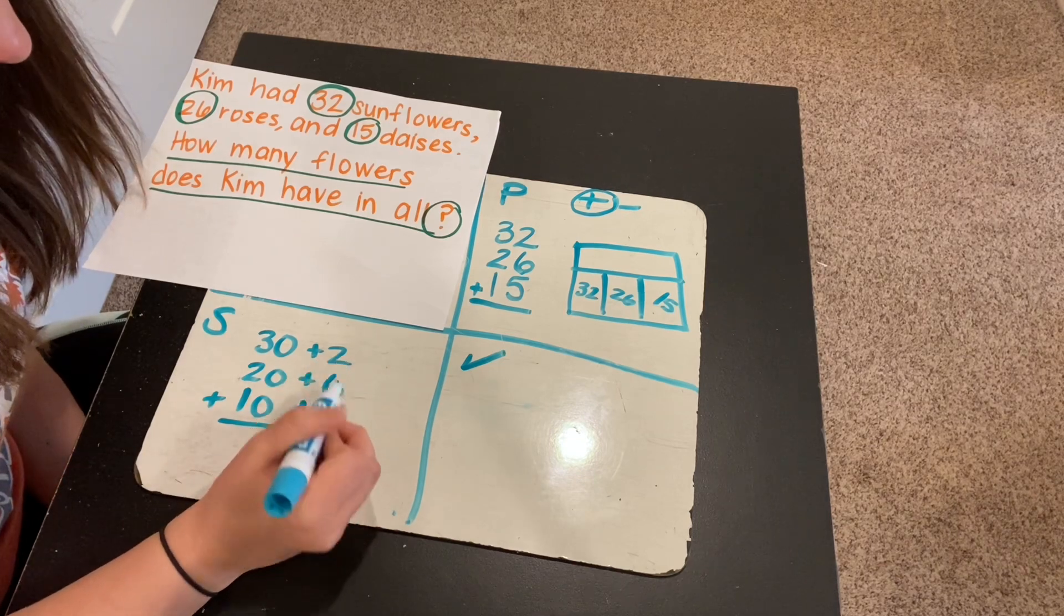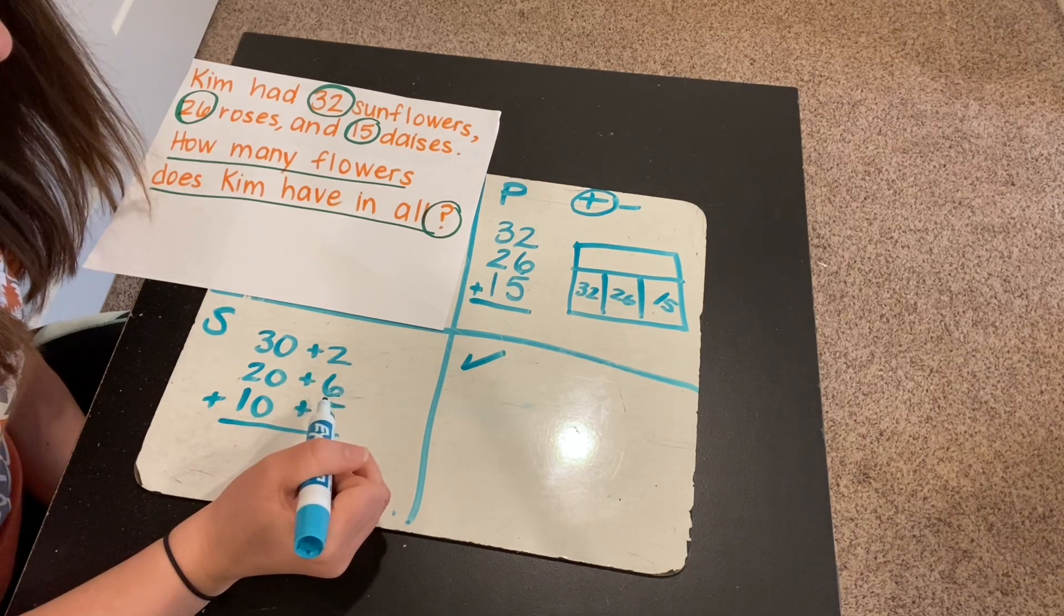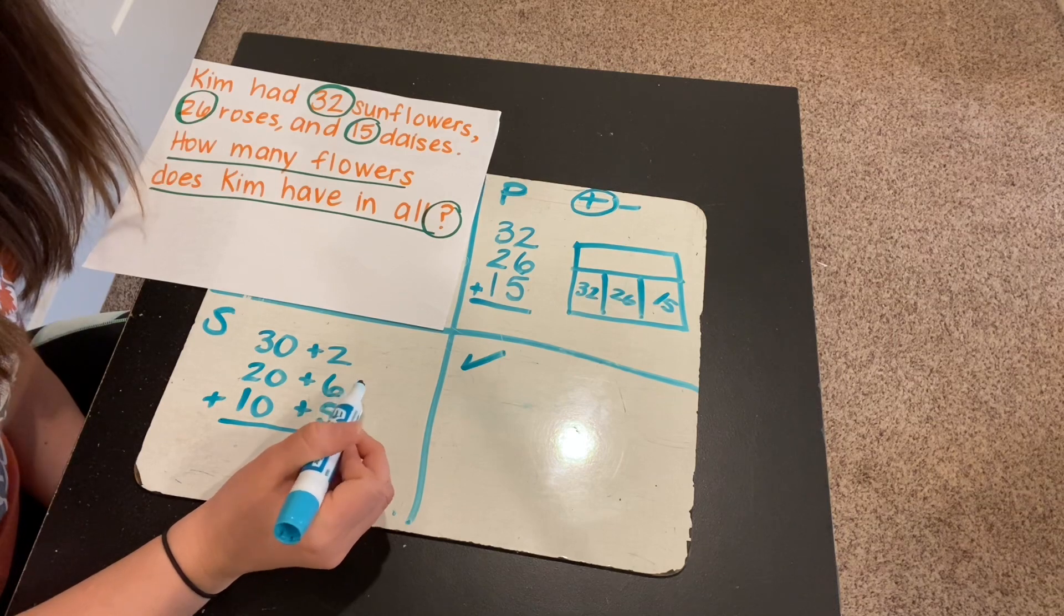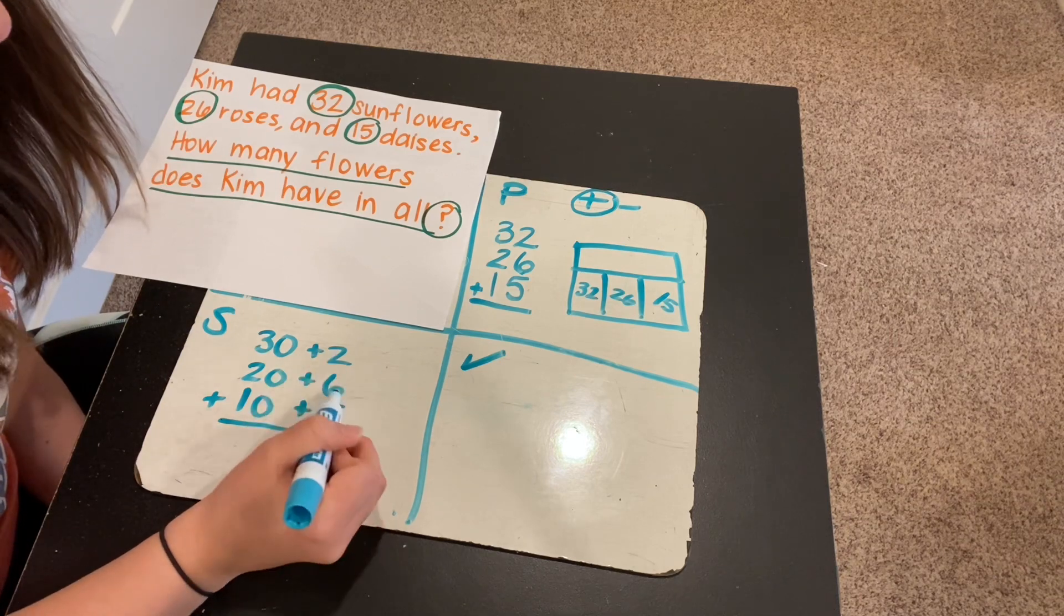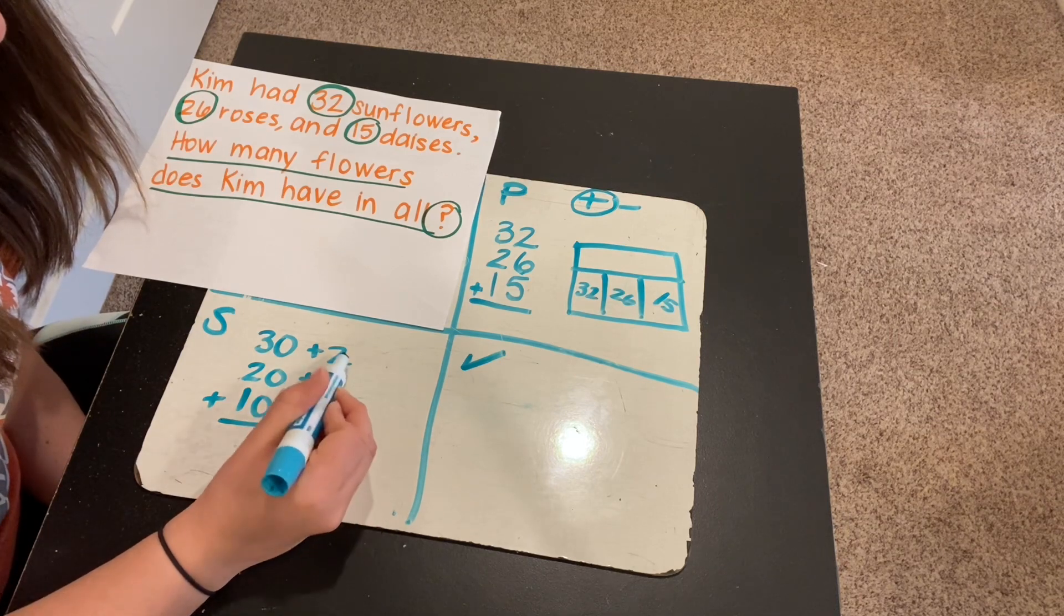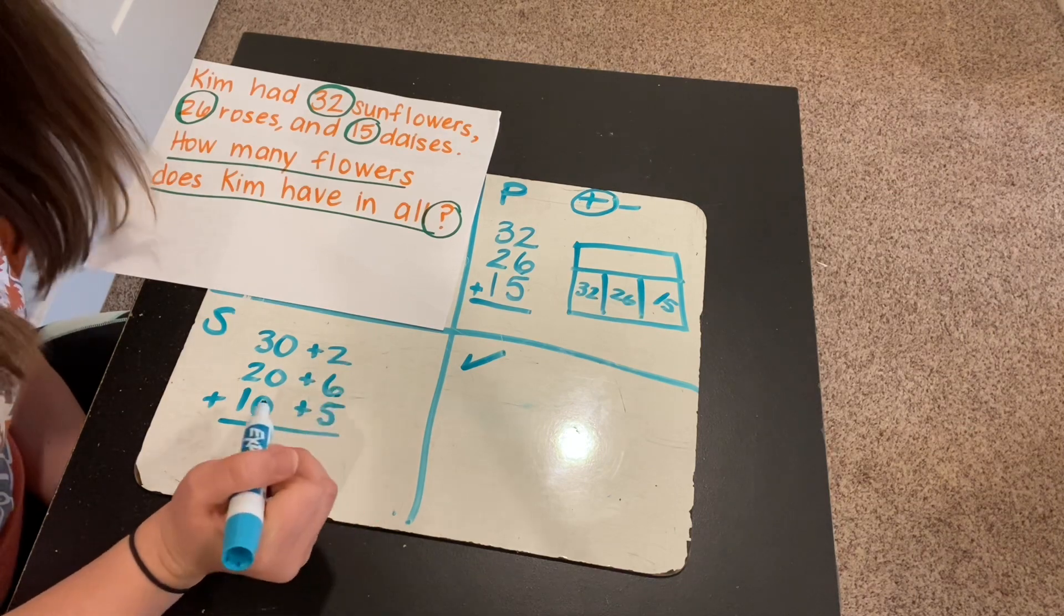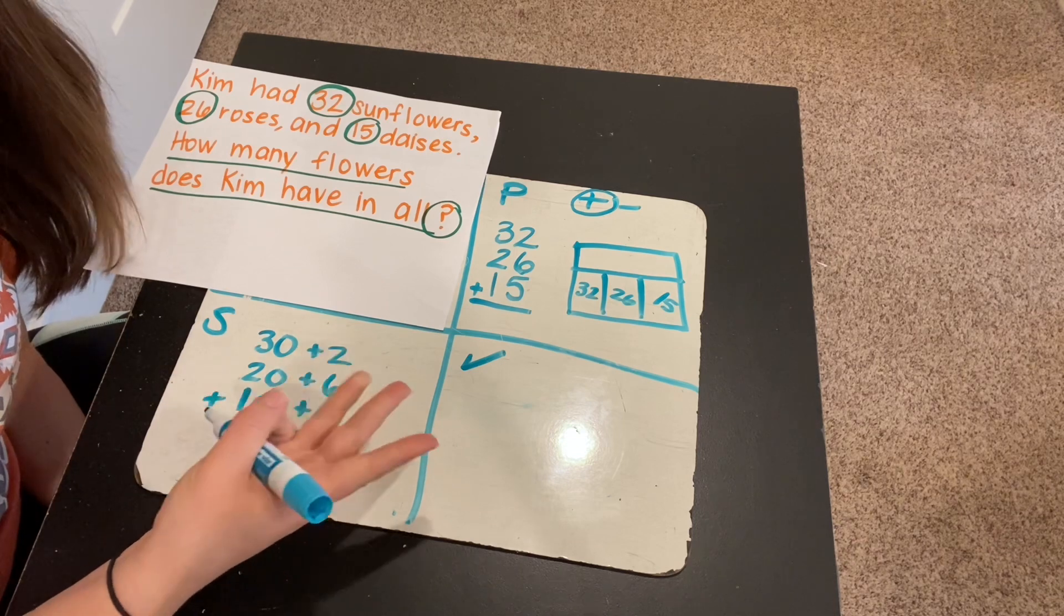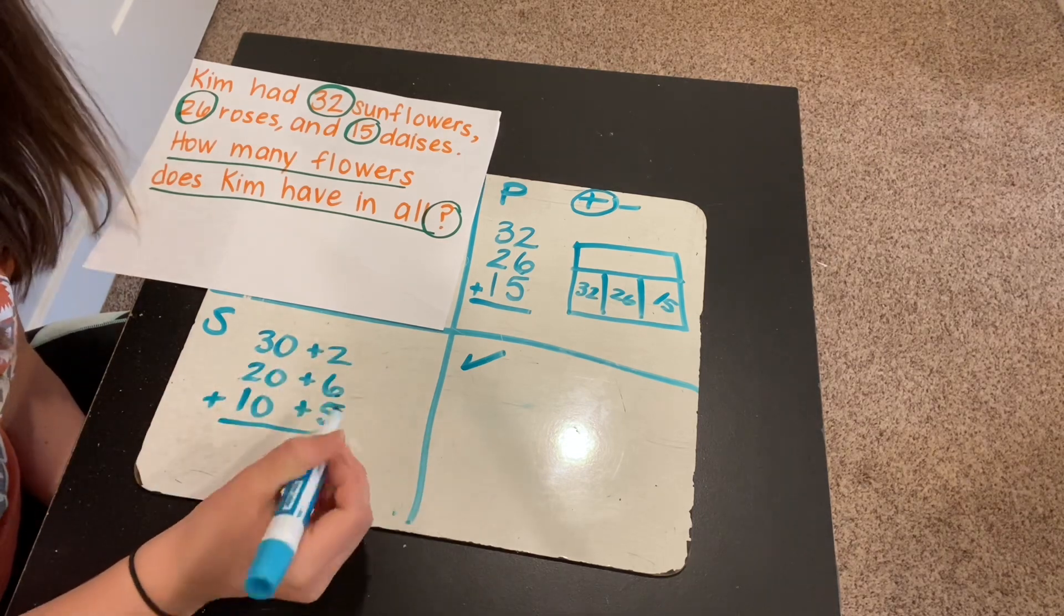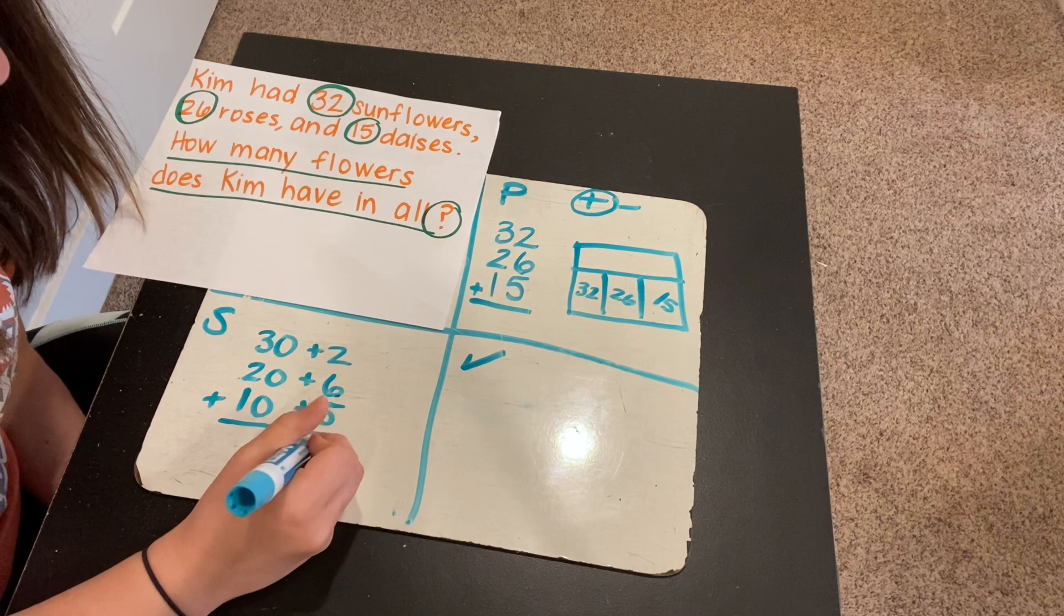Okay, now I can add these numbers together. So 2 and 6 is... Let's see, I'm going to do actually 6 and 2. 6 plus 2 is 8. And then 8 plus 5. 8, 9, 10, 11, 12, 13. Okay, so this is 13 here.